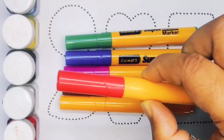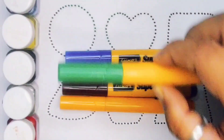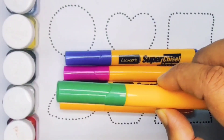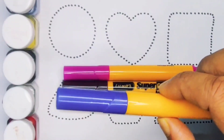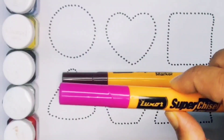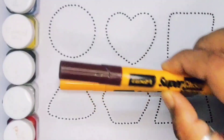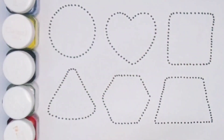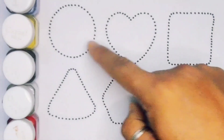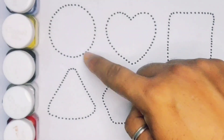Red color. Green color. Blue color. Pink color. Chocolate color. Orange color. And black color.